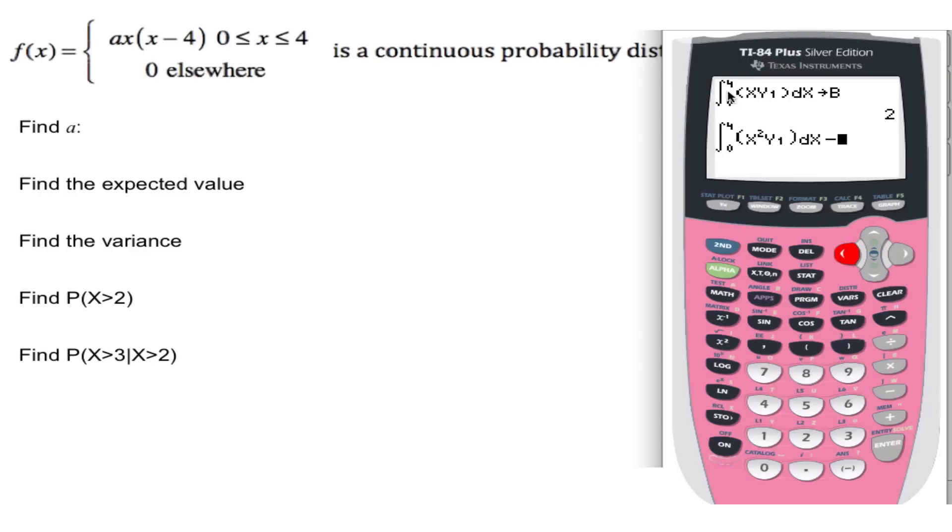Or you can just type in this whole thing again and square it, but the answer is 2, and you square it as 4. And I get 0.8, so the variance is 0.8.